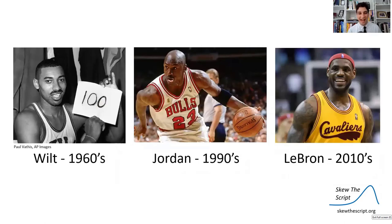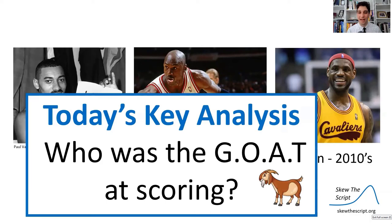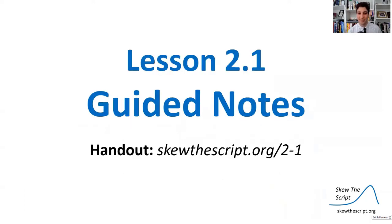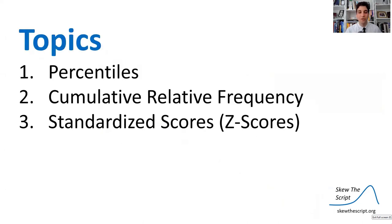Today we're going to look at three athletes: Wilt Chamberlain, Michael Jordan, and LeBron James, and we're going to ask who was the GOAT — the greatest of all time — in terms of scoring in basketball.